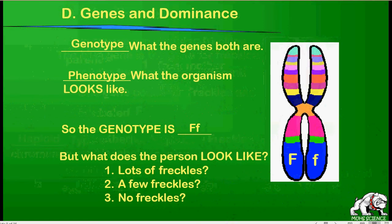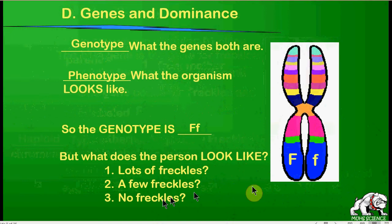We have to understand how dominance works on genes. In this case it's complete dominance. The genotype is what the genes are, and the phenotype is what the organism actually displays. So how do we know what kind of freckles they have — lots, few, or none?